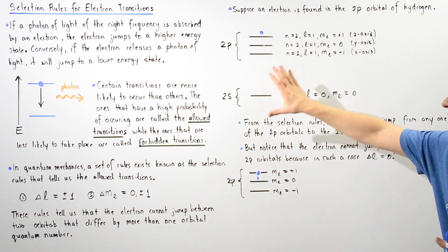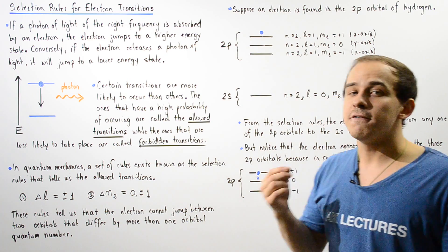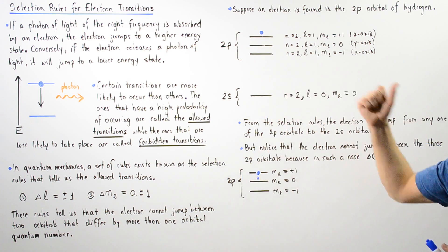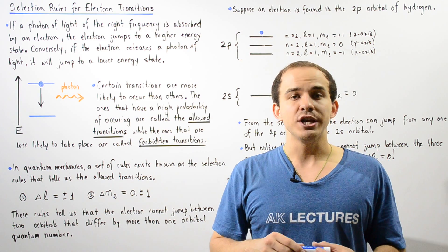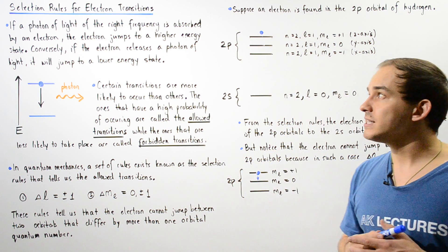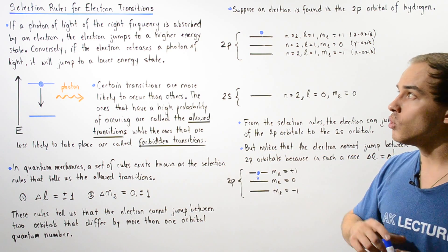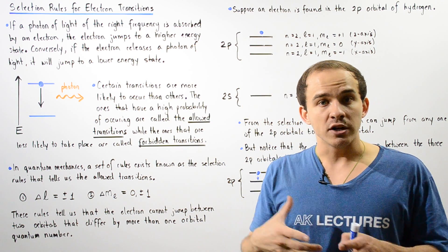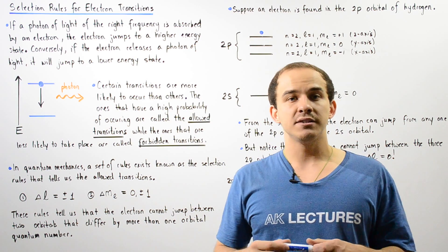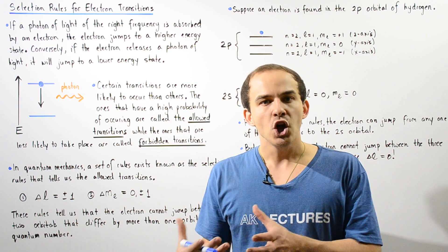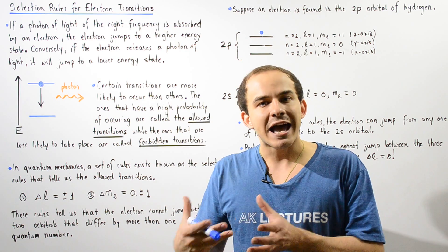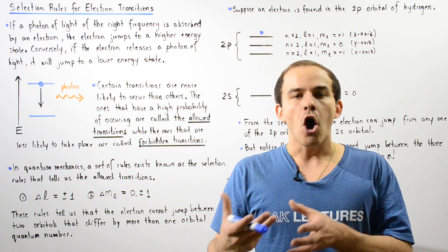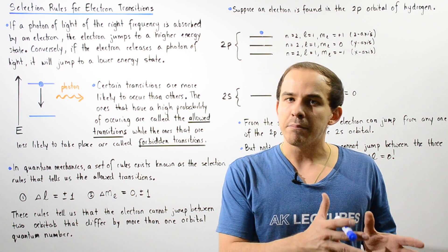In contrast, the allowed transition has a very high probability of actually taking place. So, once again, these rules known as the selection rules are used in quantum mechanics to determine which electron transitions are the probable ones and which ones are the improbable ones.